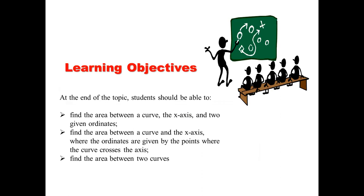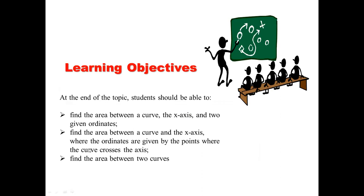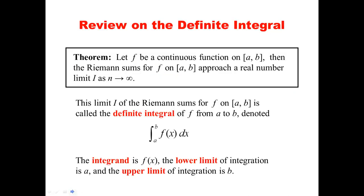Let's start with the learning objectives for this topic. At the end of the topic, you are expected to be able to find the area between a curve, the x-axis and two given ordinates. Or you are also to determine the area between a curve and the x-axis where the ordinates are given by the points where the curve crosses the axis. Then you are also to determine the area between two curves.